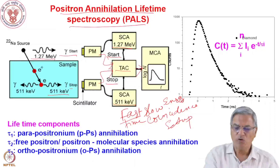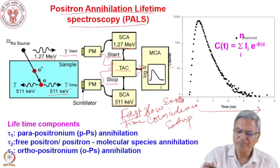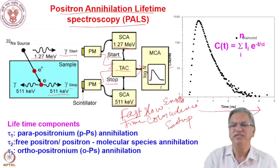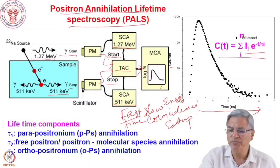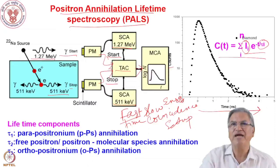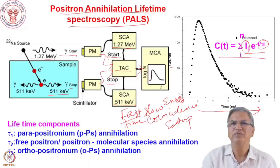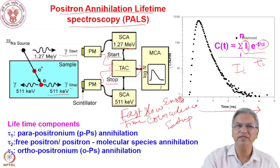The output is the time spectrum: counts versus time. What you get is a fast rise and slow exponential decay. That exponential decay shows multiple components — maybe two or three exponential decays. Each component has an intensity i₁, i₂, i₃ and a lifetime τ₁, τ₂, τ₃. You fit this data to a multi-exponential curve and get the constants Iᵢ and τᵢ.